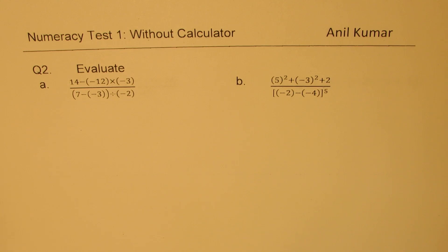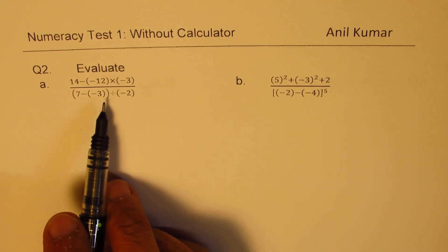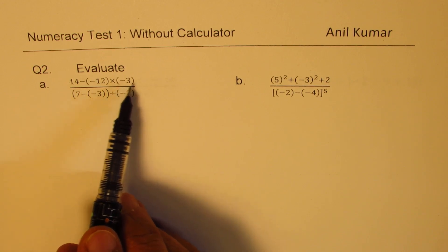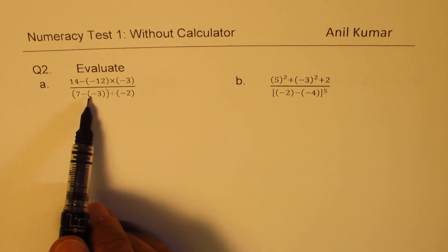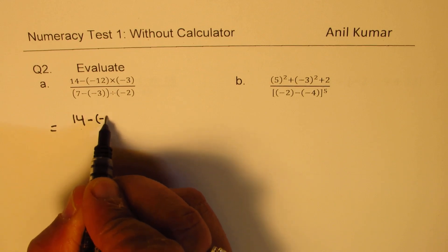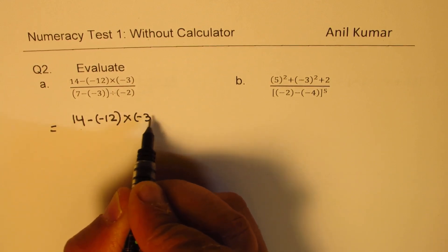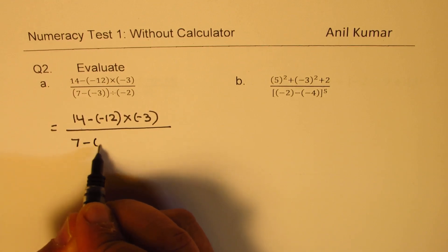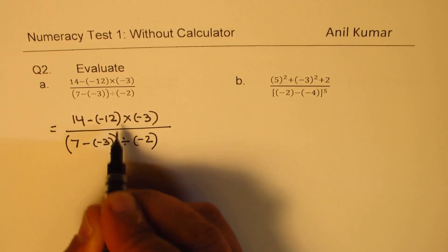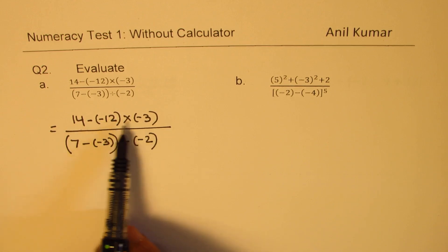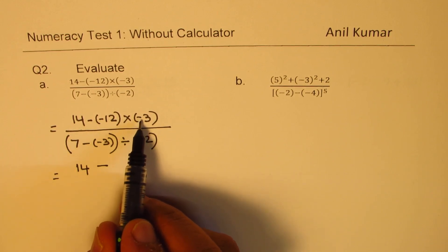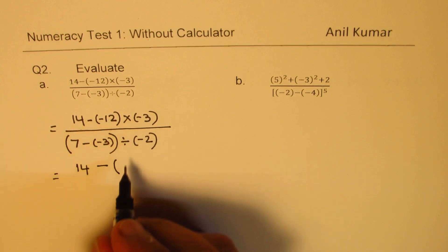Question number 2 — we'll learn rules of order of operation and work with integers. Question 2 is to evaluate: 14 minus (-12) times (-3) divided by 7 minus (-3), all divided by minus 2. Let's do part A first. It is 14 minus (-12) times (-3) divided by [7 minus (-3)], and all of this divided by negative 2. First perform the multiplication — minus times minus makes it positive, so we get positive 36.